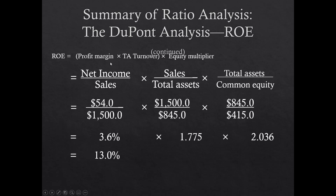Extending DuPont: ROE = profit margin × total asset turnover × equity multiplier = (net income/sales) × (sales/total assets) × (total assets/common equity): 3.6% × 1.775 × 2.036 = 13% return on equity. This decomposition shows how profitability, asset utilization, and financial leverage each contribute — allowing you to pinpoint where the firm has problems and where to focus improvement efforts.